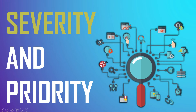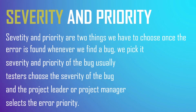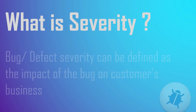Hi friends, welcome to the S3 Cloud Hub channel. In this video we are going to see severity and priority. These are two things we have to choose once an error is found. Whenever we find a bug we pick its severity and priority. Usually testers choose the severity of the bug and the project leader or project manager selects the priority.